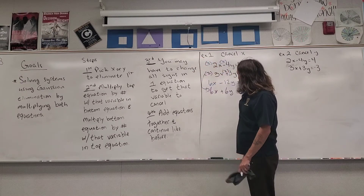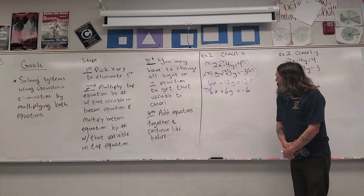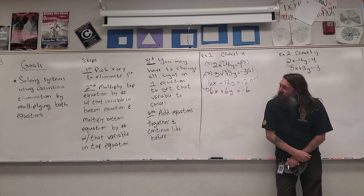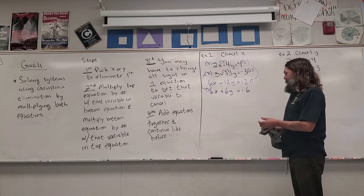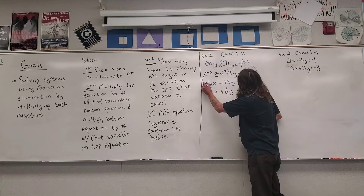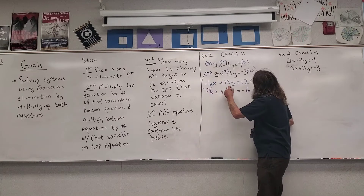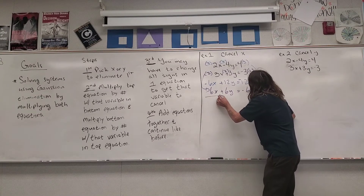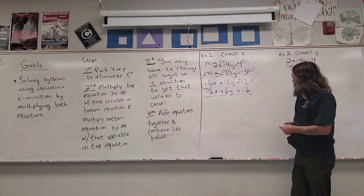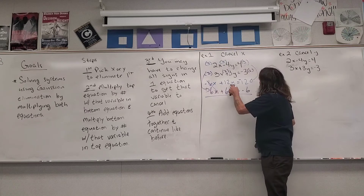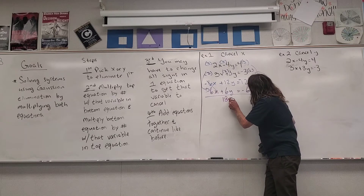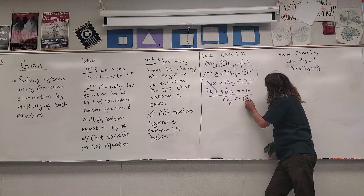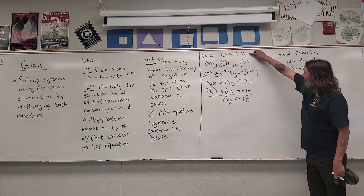My third step: you may have to change all the signs in one equation to get that variable canceled. I want to cancel my x, and as it stands right now they're not going to cancel — they're going to add. So I'm going to change all the signs in the top equation. My plus 6x becomes minus, my minus 12y becomes positive, and my positive 12 becomes negative. Now I add my equations together and my x values cancel. 12y plus 6y is 18y, and negative 12 plus negative 6 gives me negative 18. So 18y equals negative 18. I canceled the x.